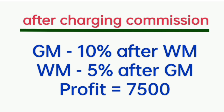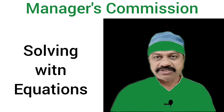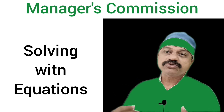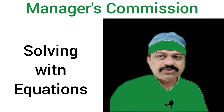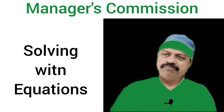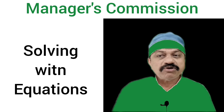The General Manager will get 10% of the profit after deducting Works Manager's Commission. The Works Manager will get 5% of the profit after deducting General Manager's Commission. Here, we have to develop two equations and solve them to find out the answer. We have to substitute known values into the equations and solve for the unknown variables. Let's solve the problem.